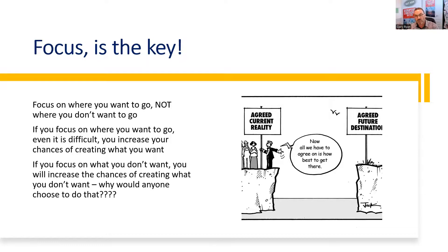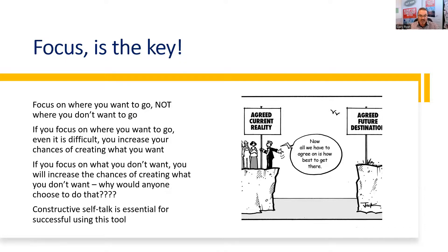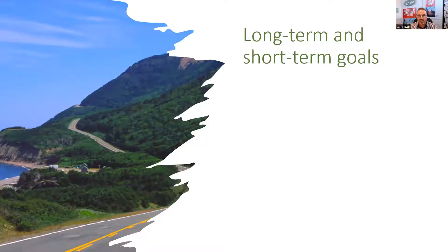That's just one example of many of how this works. If you focus on what you want, it can't guarantee it, but it significantly increases the chances of you getting what you want. If you focus on what you don't want, it actually increases the chances that you'll get what you don't want. Constructive self-talk is an essential tool for using creative tension, and we focus on that in the third session in this program.